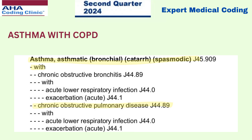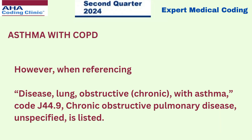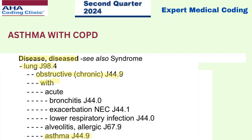As you can see here, if you're searching with the main term asthma, versus searching with the main term disease, lung, obstructive, chronic with asthma, code J44.9 — chronic obstructive pulmonary disease unspecified — is listed. Searching with the main term disease, lung, obstructive, chronic with asthma leads to code J44.9.